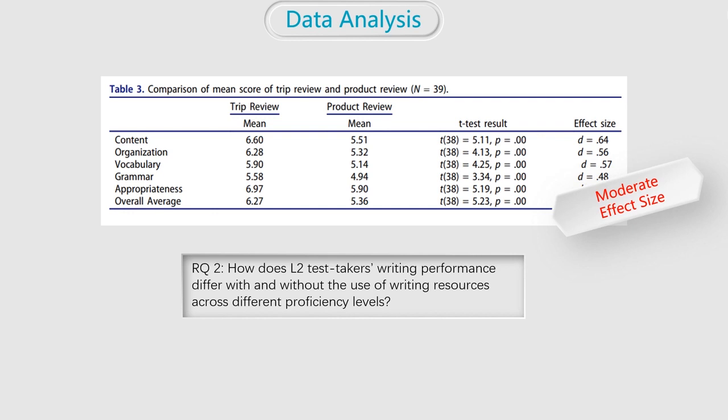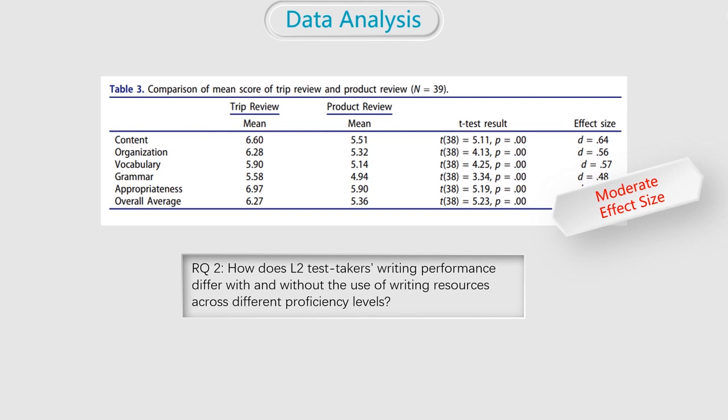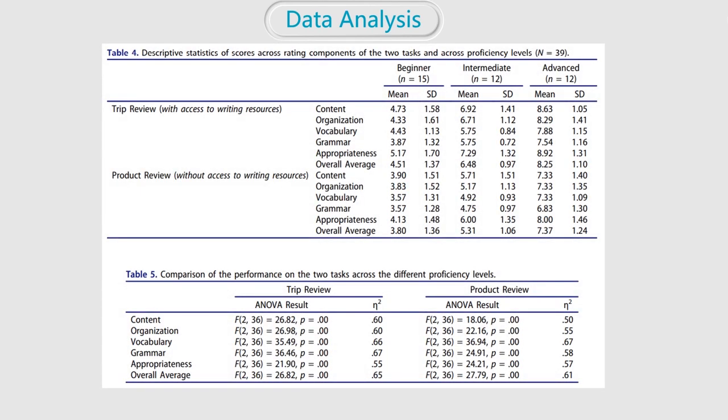The author performed another ANOVA test to see the differences of performance among three proficiency groups of students. And the first table, just like the first one before, shows the descriptive data of the performance of each group in each component. Then this data was computed in ANOVA test. Then the results suggested that in both trip review and product review tasks, the performance of three groups of students differed significantly.